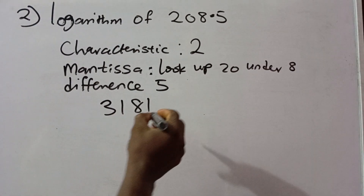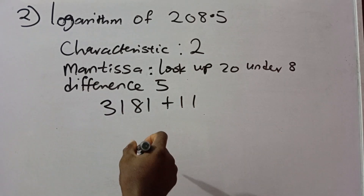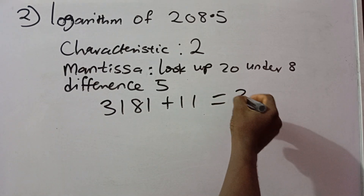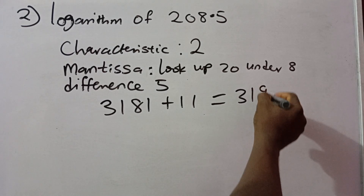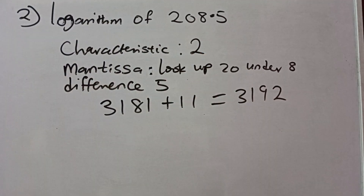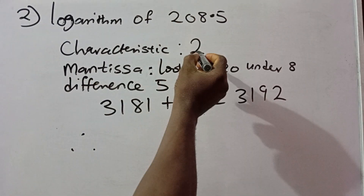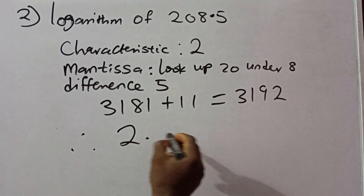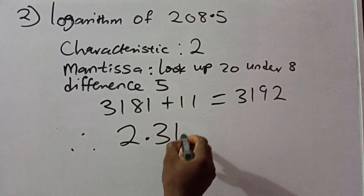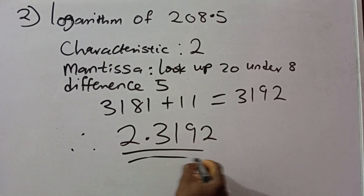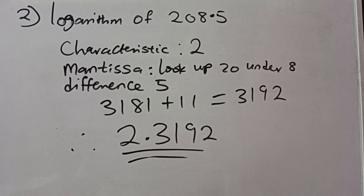Therefore, the logarithm of 208.5 gives us the characteristic first — 2 — then the mantissa: 3192. So log(208.5) = 2.3192. This is exactly how to look up logarithm of numbers using a table. Thank you for listening, and give yourself a try with many questions in your textbooks. Thank you.